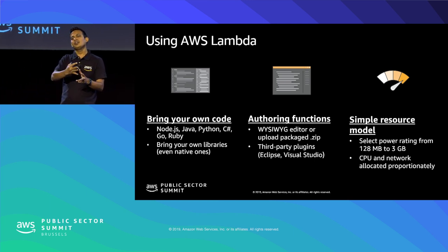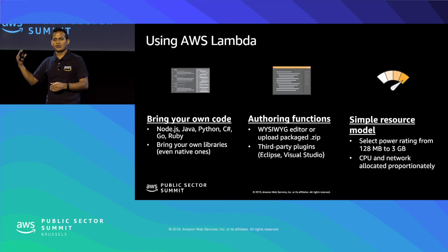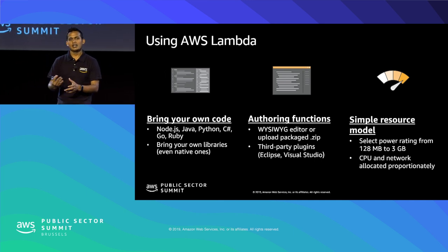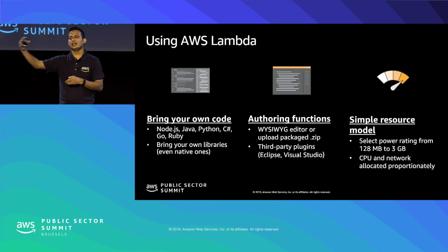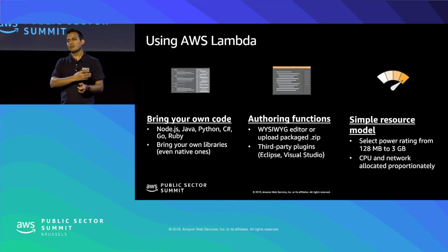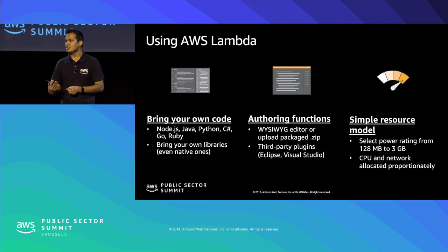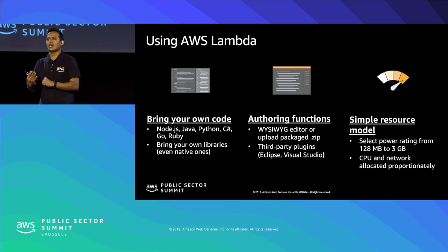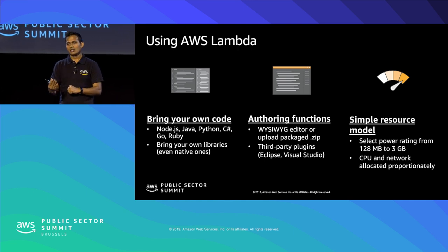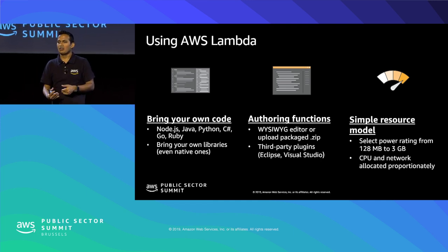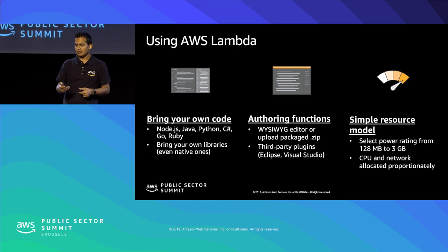There are many event sources that can trigger Lambda. For data stores, storing an object in S3 automatically triggers a Lambda function. For messaging, sending a message to an SNS topic automatically triggers Lambda. You can also schedule Lambda functions using cron jobs. A very common use case is Alexa — most Alexa backends run on Lambda, so you only pay when a user makes an Alexa call, not for a server always running.